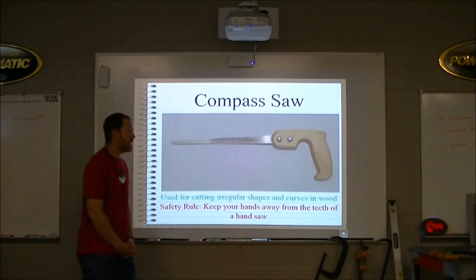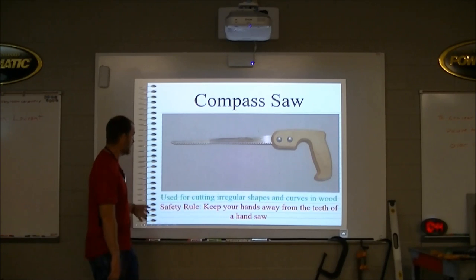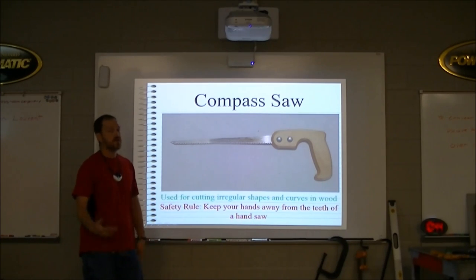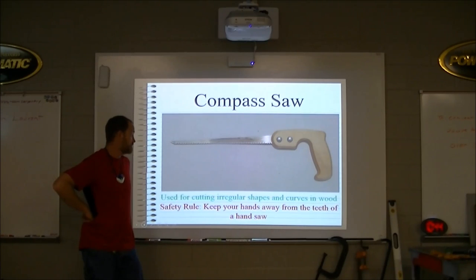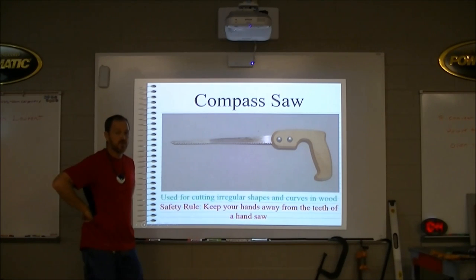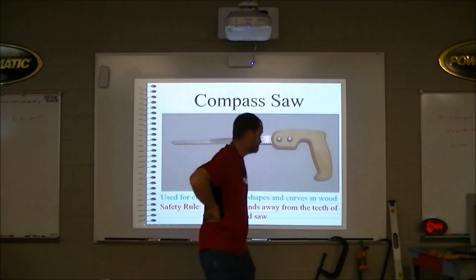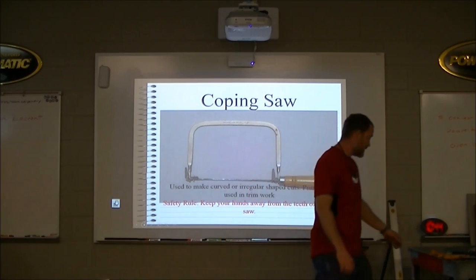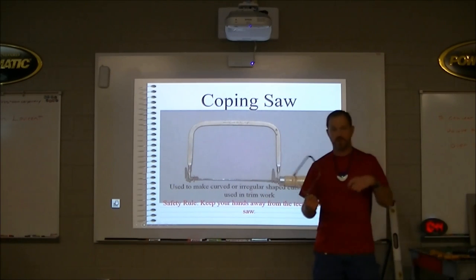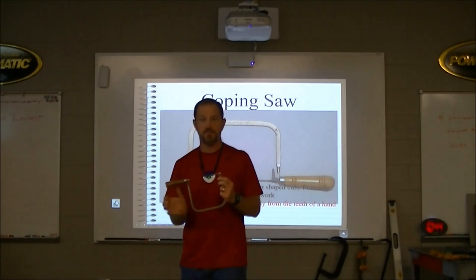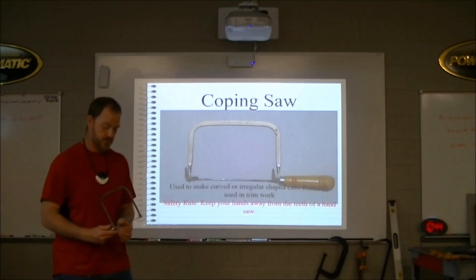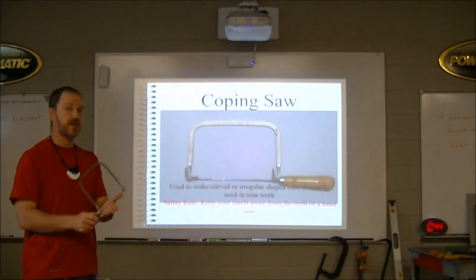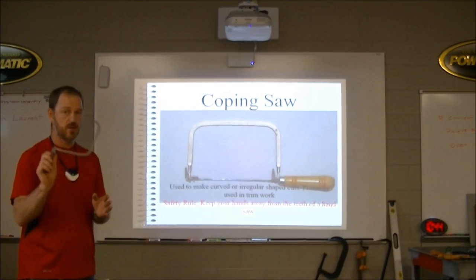This is a compass saw. I don't have one, but you need to know it's used for cutting irregular shapes in wood and sometimes sheet rock. In a situation where you've got to cut a hole for a pipe coming through the wall, you might use a compass saw. A coping saw is used primarily for running trim — baseboard, crown molding, things of that nature. You can cut all kinds of shapes with it; it's a pretty versatile tool.